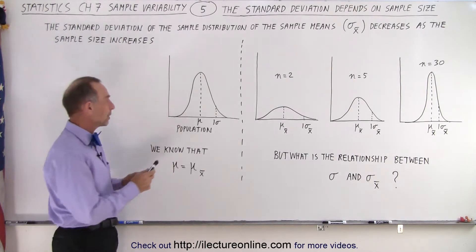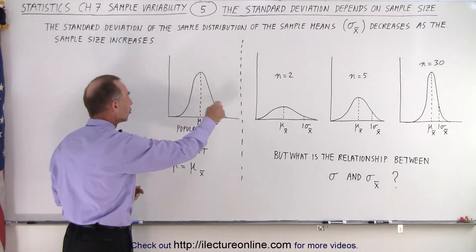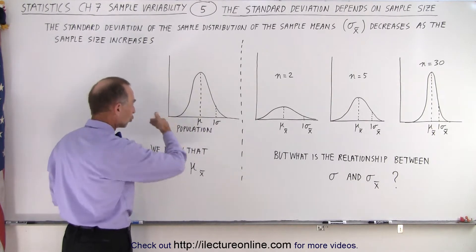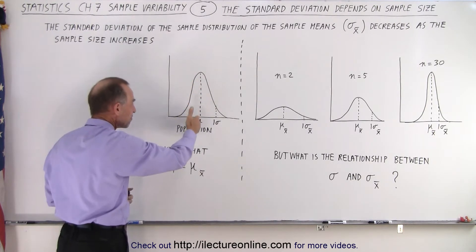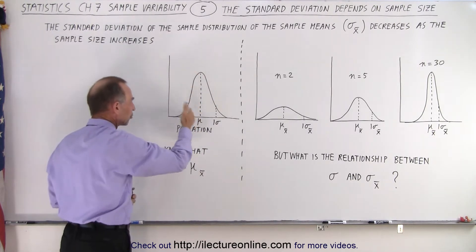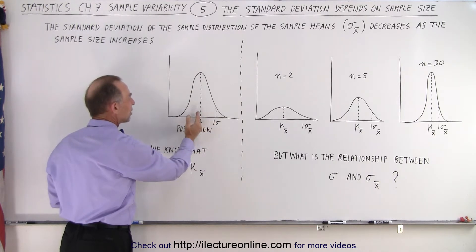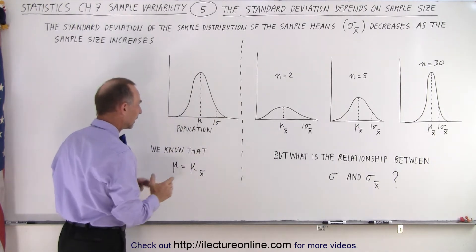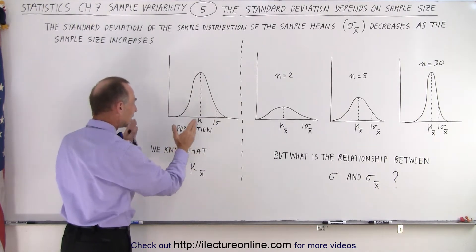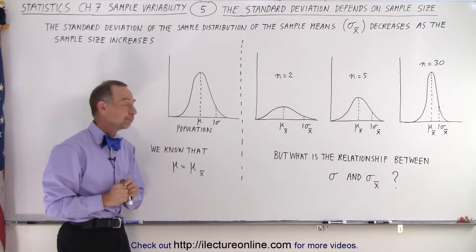Here we have a population distribution. It's a normal distribution. We can find the mean or the average of the population, and we can see that one standard deviation away from the mean is about there — and that is the population.